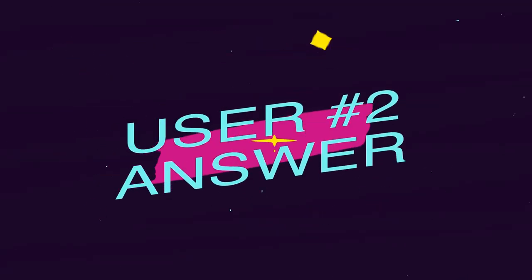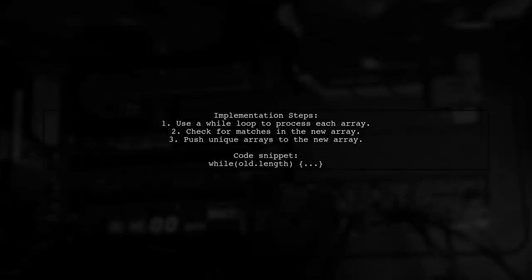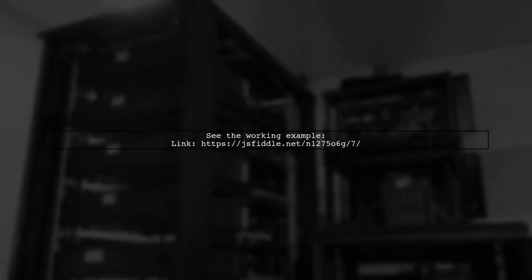Let's now look at another user-suggested answer. To remove duplicate arrays from an array of arrays in JavaScript, you can create a custom method to compare arrays. First, check if the array is falsy or if their lengths differ. Then iterate through each element, checking for nested arrays recursively. Next, use a while loop to iterate through the original array. For each array, check if it matches any already stored in a new array — if it doesn't match, push it to the new array. You can find a working example of this solution on JSFiddle, which demonstrates the complete code in action.